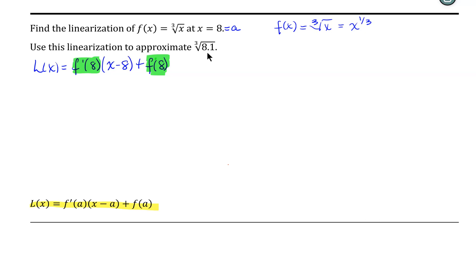We can apply the power rule and find that f prime of x is equal to 1/3rd x to the 1/3rd minus 1. Well, 1/3rd minus 1 is negative 2/3rds.